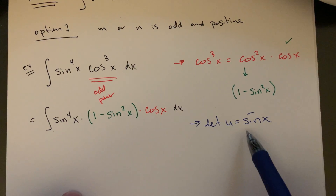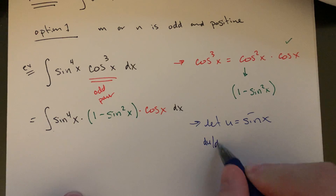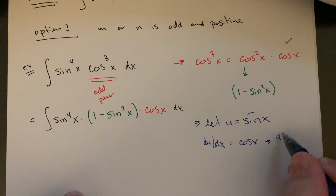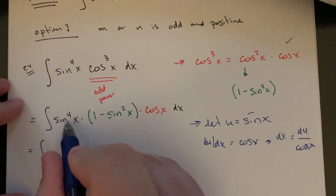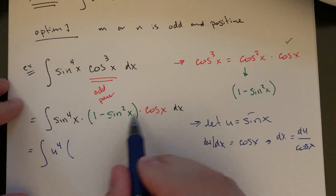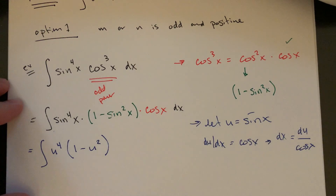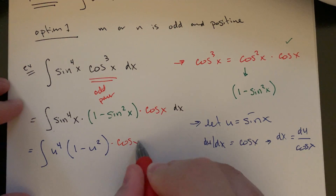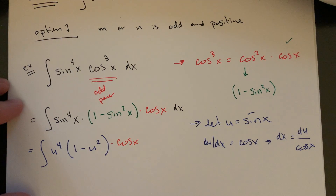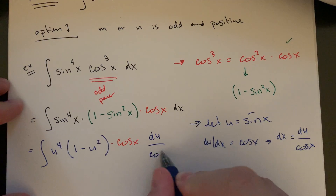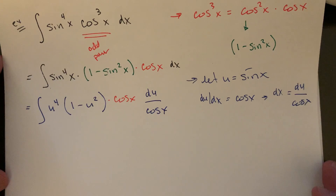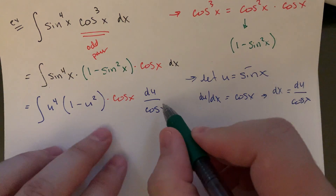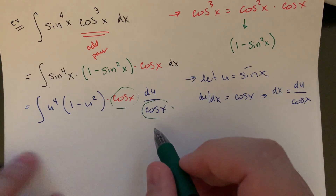Use u = sine x, so du/dx = cosine x, meaning dx = du over cosine x. When you substitute in: sine to the fourth becomes u to the fourth, one minus sine squared becomes one minus u squared, and there's still a cosine x from the integrand. Then dx is du over cosine x — the cosine and cosine cancel. This substitution is very deliberate and planned.